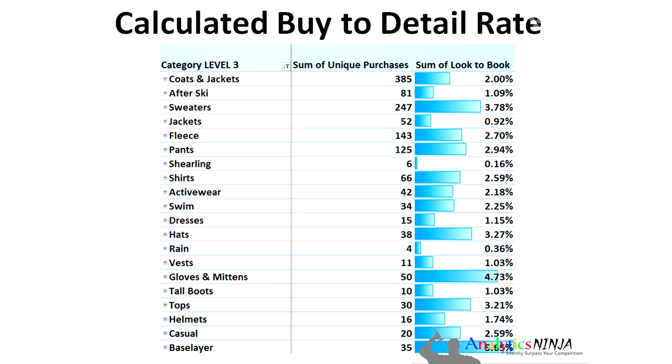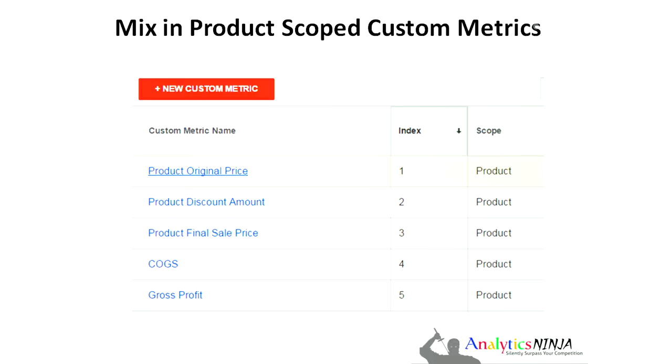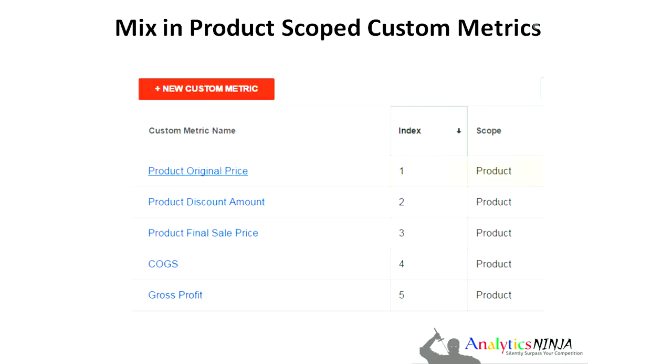My buy-to-detail rate is, again, the relative rate of purchase for sweaters — dividing the number of purchases by the number of unique page views of people looking at sweaters. Somewhat valuable, but with custom metrics it gets very valuable. By mixing in product-scoped custom metrics, you can not only describe with dimensions all of the information about your products, but you can also describe information about the transactions that are happening — how much is it discounted, what is my cost of goods sold, and what is the gross profit.